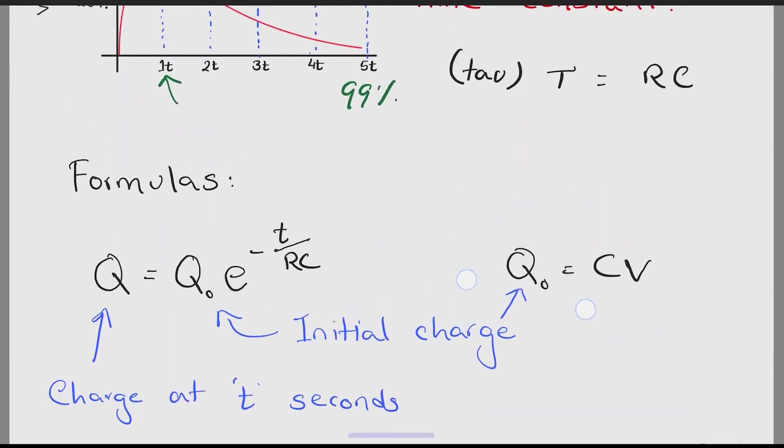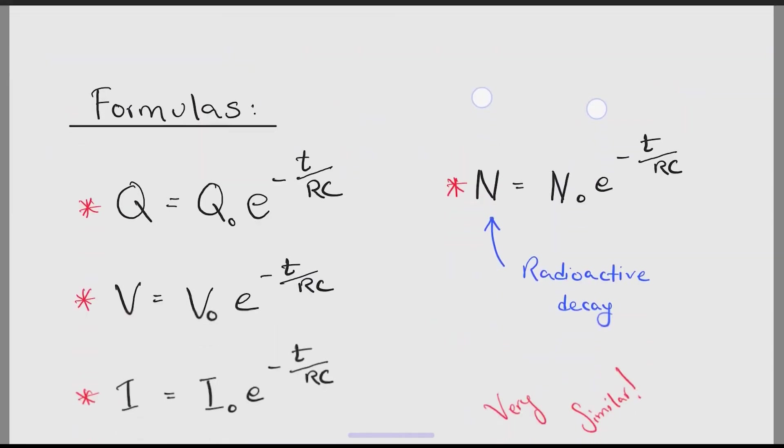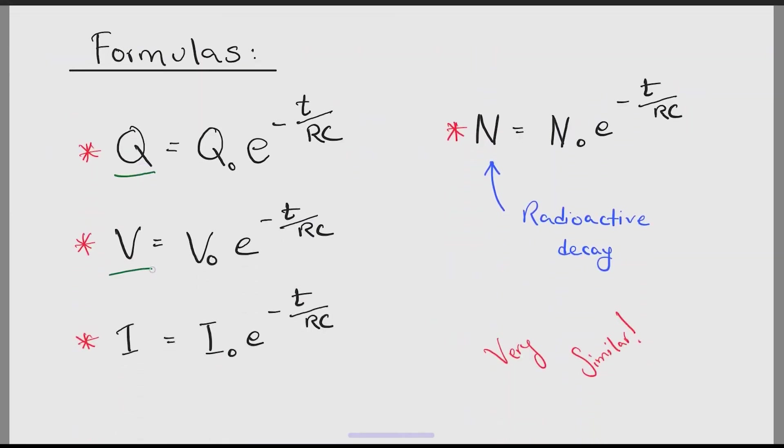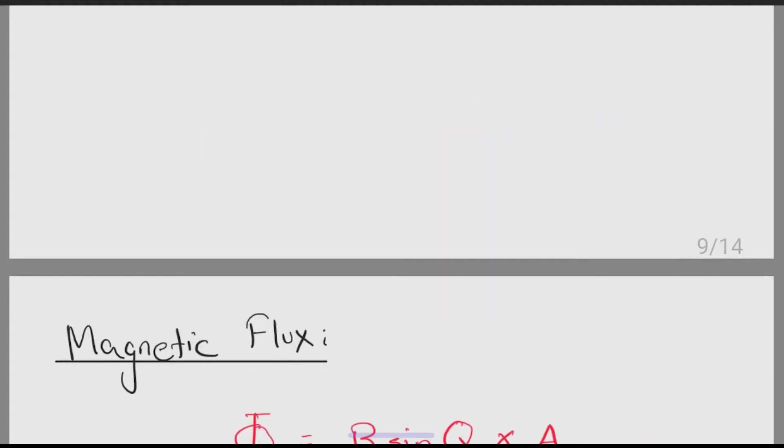Here is a quick formula for finding charge. As we go down below, we can find similar formulas for charge, voltage, current and even the number of particles in radioactive decay. These formulas are all very important. You can just remember one, they are all the same.